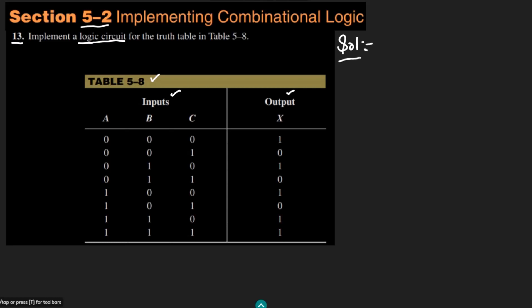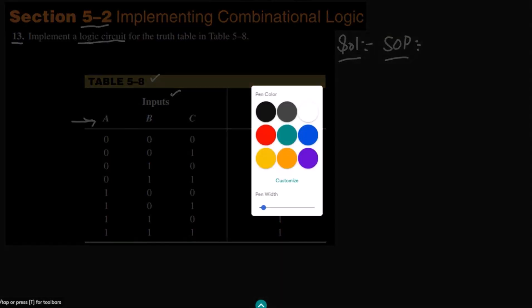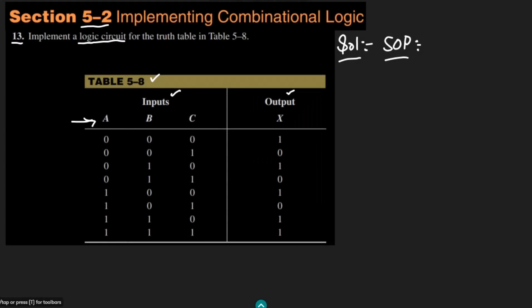The first thing is to identify the domain, which is composed of the inputs: A, B, and C. For these inputs I have to calculate the Sum of Products (SOP) form. To find the SOP form, I select all the terms where the output is 1. There are five such terms, and I make each product equal to 1 by complementing the appropriate variables. The first term is 0 0 0, which gives A complement B complement C complement.